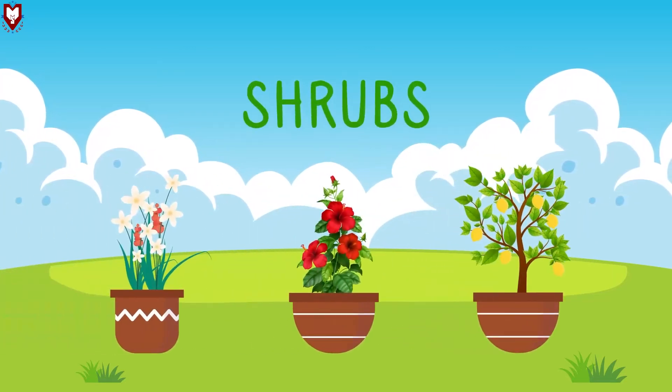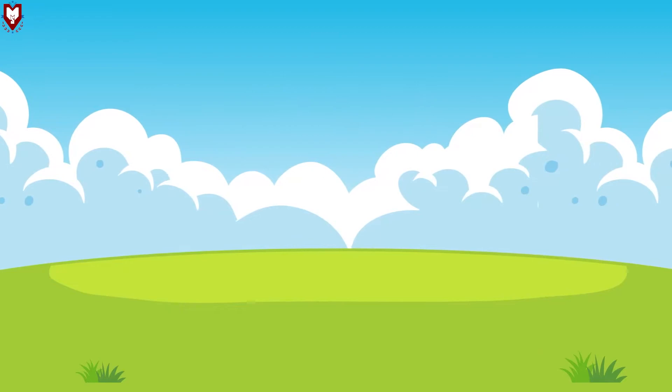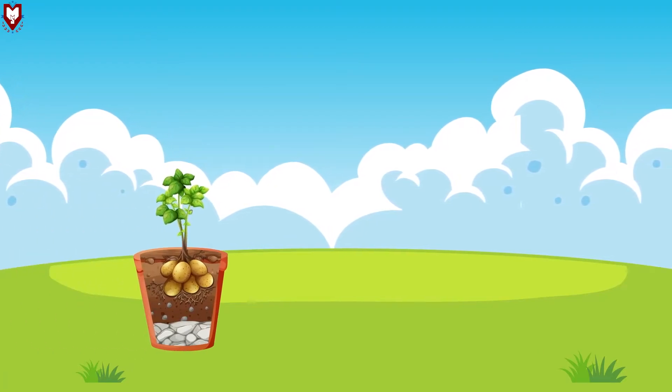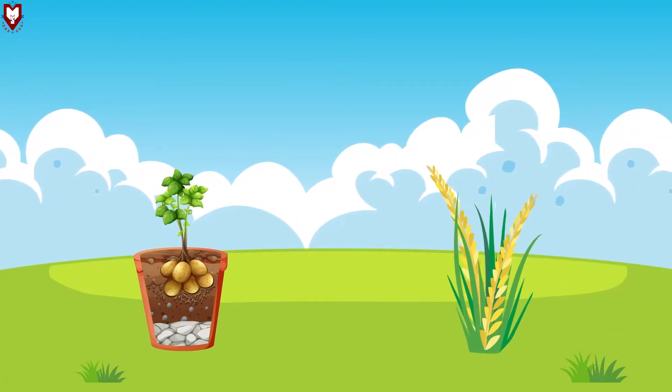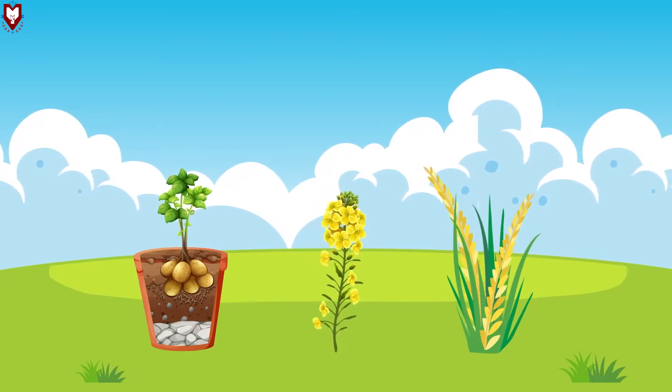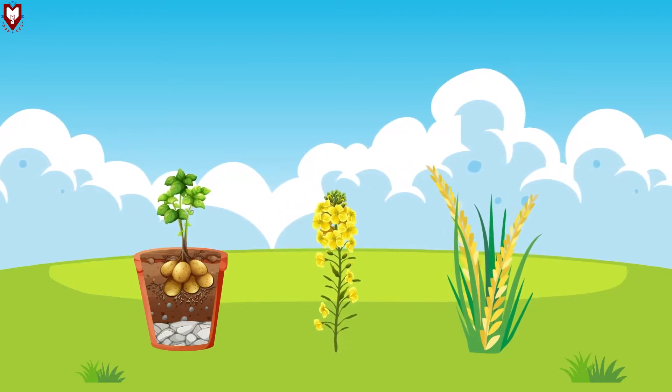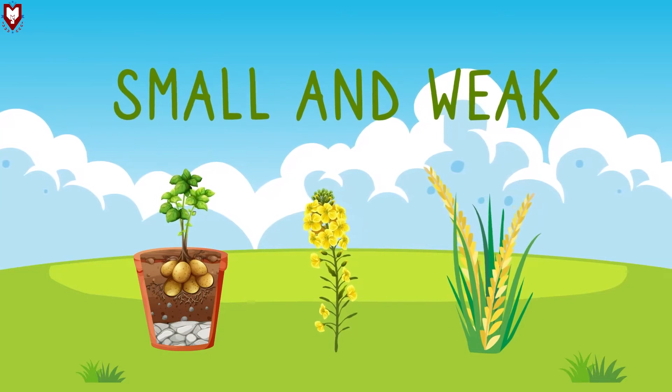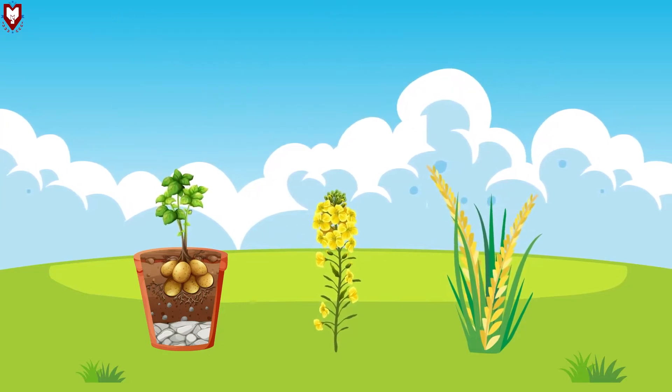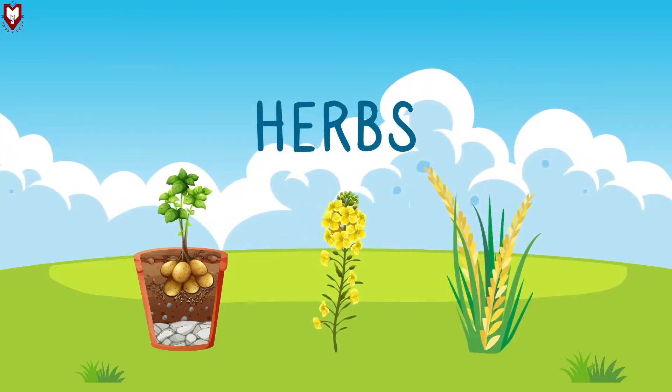Some plants like potato, rice, mustard, etc. are very small and weak. These are called herbs.